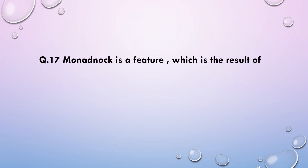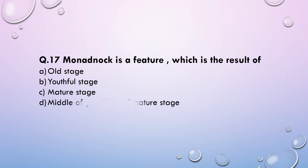Next question: Monadnock is a feature which is the result of which stage? Options: (a) old stage, (b) youthful stage, (c) mature stage, or (d) middle of youthful and mature stage. Monadnock is created by the river land process and is mainly formed in the old stage. It is part of the Davisian cycle of erosion, and monadnock is similar to Penck's endrumpf. The answer is old stage.